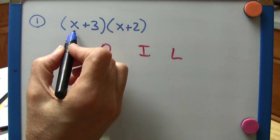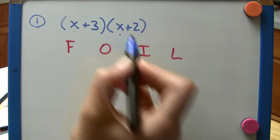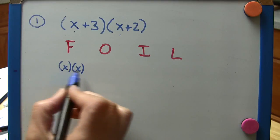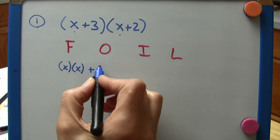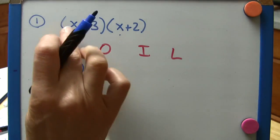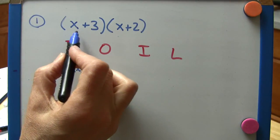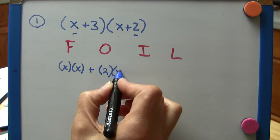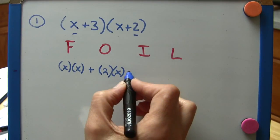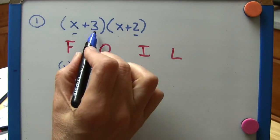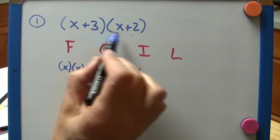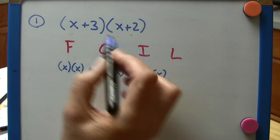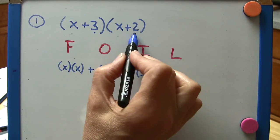Well first, we want to look at the first term in each binomial. So that's x and x, and we're going to multiply those two together. And then the outer, well that means the two that are on the outside. Well that's going to be 2 and x. Inner, well in this case, the ones closest together here inside, that's 3 and x. And then last, well that's 3 and 2.